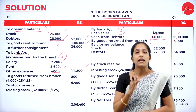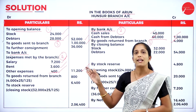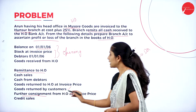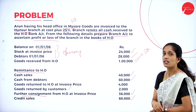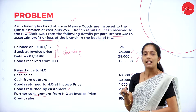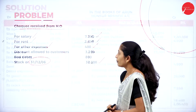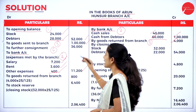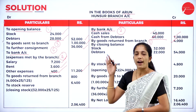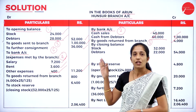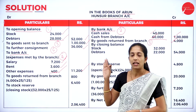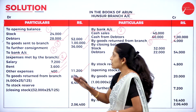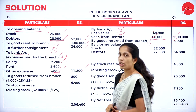Fifth step: if there is any further consignment, record it on the debit side of the branch account. The question gives further consignment from head office at invoice price 36,000. Record on the debit side as 'to further consignment: 36,000.' It is not mandatory to follow this exact order, but going step by step ensures no entries are left out.